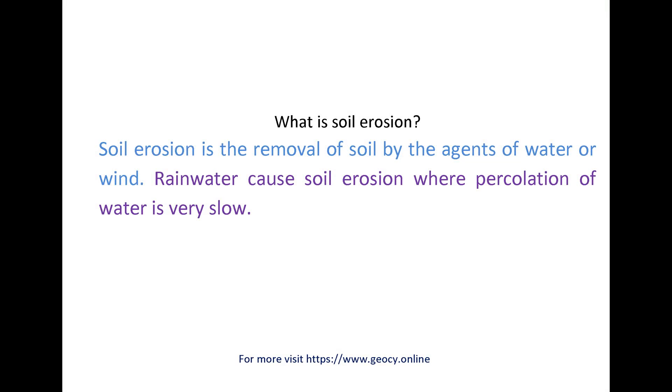Soil erosion is the removal of soil by the agents of water or wind. Rainwater causes soil erosion where percolation of water is very slow.